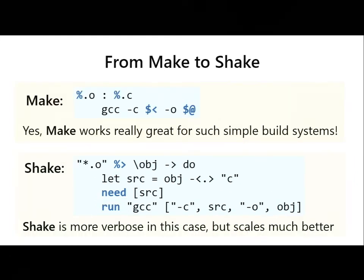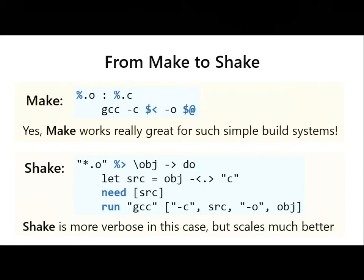Let me show how we migrate from make to Shake and the easy, quick wins we get. It's worth mentioning that a build rule expressed in Shake is more verbose than the equivalent in make, because make uses a very concise syntax convenient for simple build systems but not scalable for something more complicated. If you have a very simple build system, by all means use make — it works great. But if you need to scale for a large software project, you're better off with Shake, as I'll show in a couple of examples.